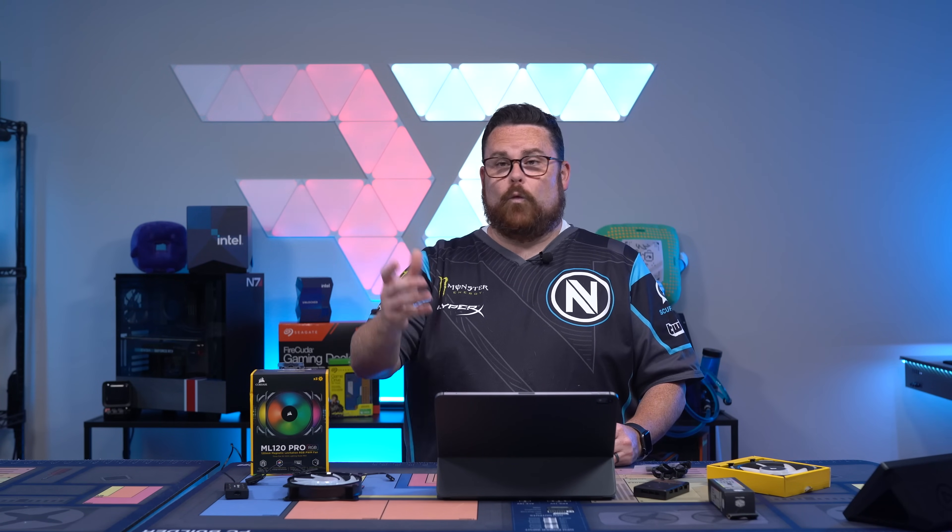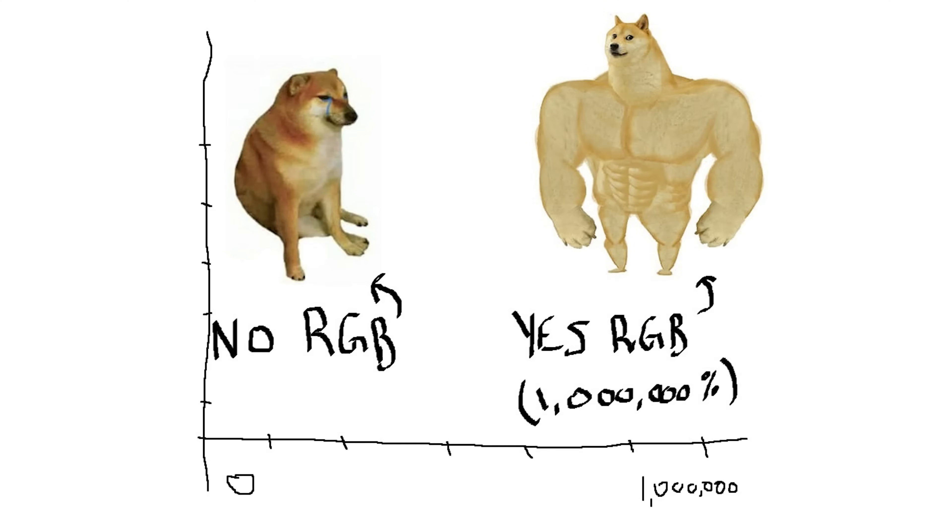RGB is probably one of the most important, if not the single most important thing you can add to any system. We all know that RGB boosts performance of PCs by like a million percent — you heard it here first folks. In fact, we're going to show you a graph that Josiah made showing a PC without RGB and then a PC with RGB — 1 million percent better increase.